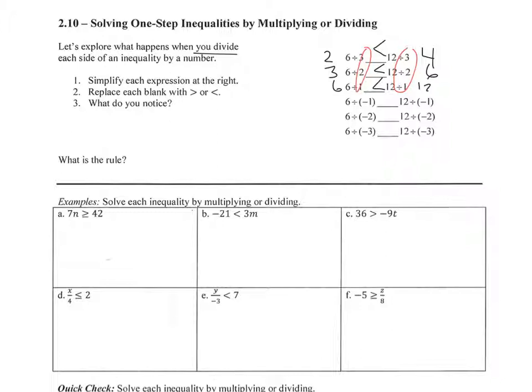Now what happens if you divide by these negatives? This is what's going to happen. So 6 divided by negative 1 is negative 6. 12 divided by negative 1 is negative 12. All of a sudden, negative 6 becomes greater than negative 12.